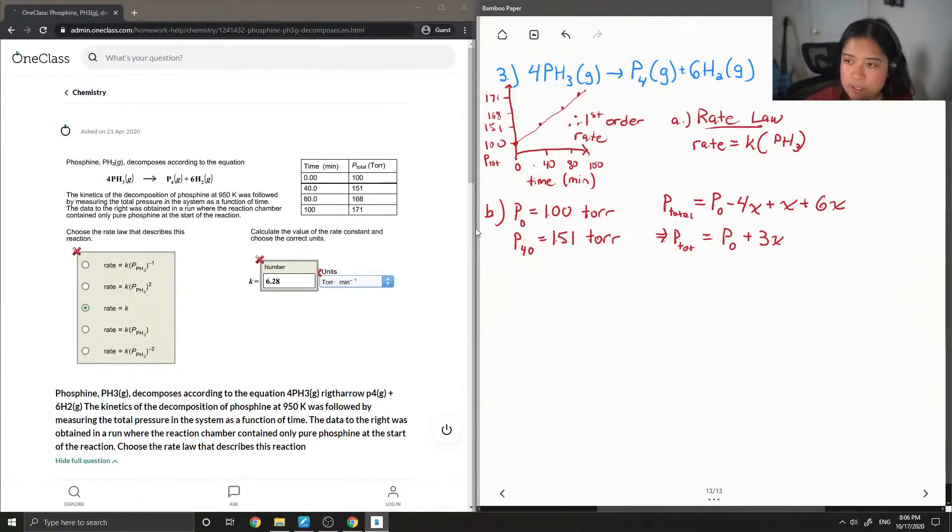Okay, so we can solve for x. I'm going to use a different color. So let's say at 40 minutes, the pressure in the system is 151. So this is equal to 100, which is what we started with, plus the 3x. And then I'm just going to solve for x, and you're going to get 17 torr.